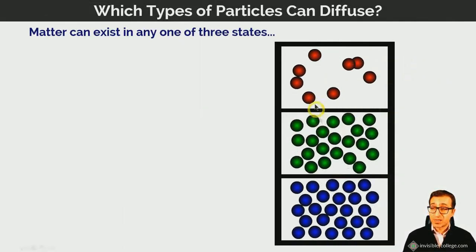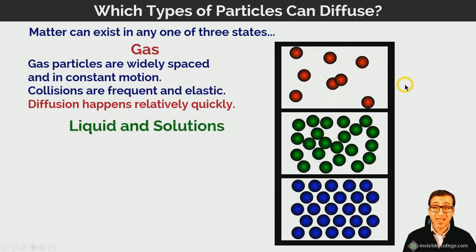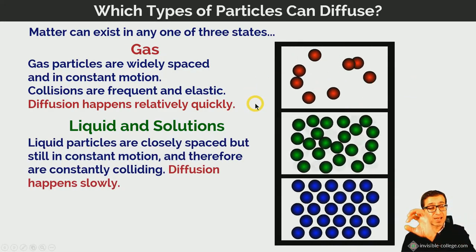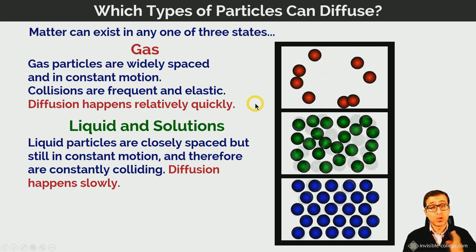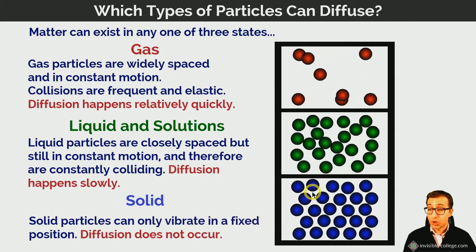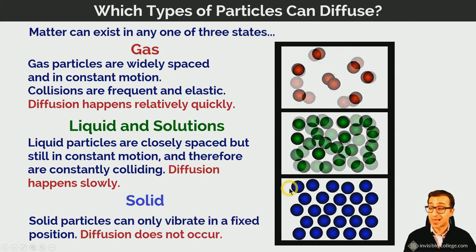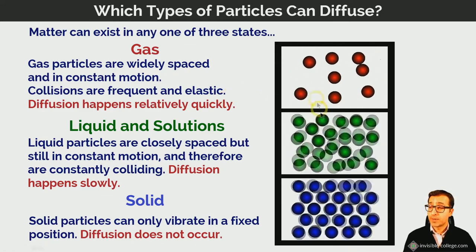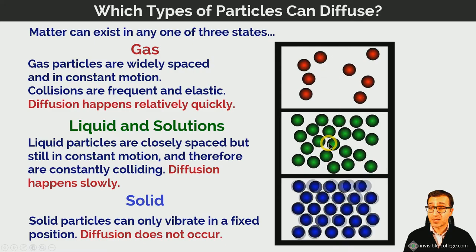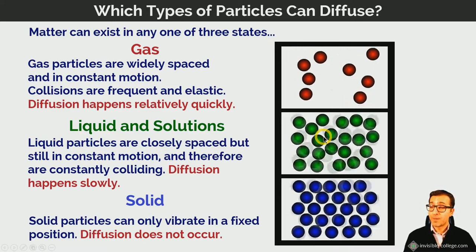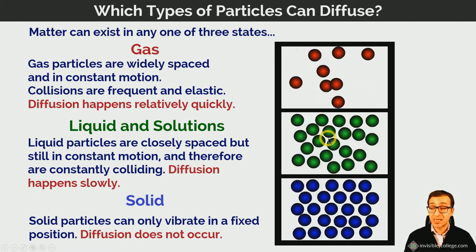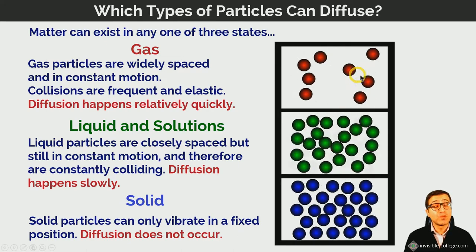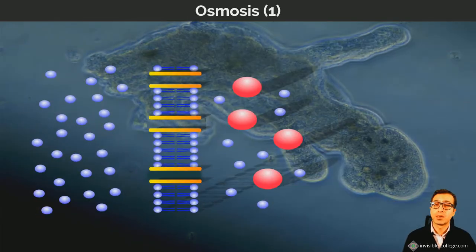Only fluids — liquids and gases — can diffuse, because in the gas and liquid state particles can move translationally in straight lines until they collide with another particle or the walls of their container. In the solid state, particles are locked into average positions and vibrate rather than translate, so solids cannot diffuse. Typically the rate of diffusion of a gas is higher than that of a liquid because gas particles are generally moving more rapidly.